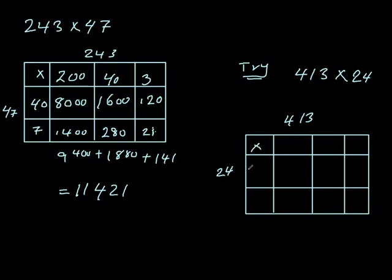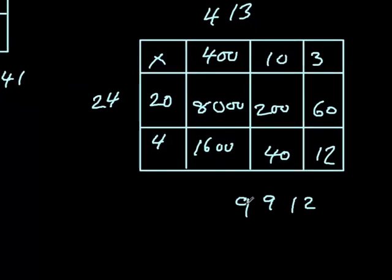413 times 24. So it's 400 on there, then 10, and then 3, and then it's 20 and 4. And when we times them, I get 8000, and I get 200, and I get 60, I get 1600, 40, and 12. And adding these six numbers up together, whichever way you like to do, should make 9912.